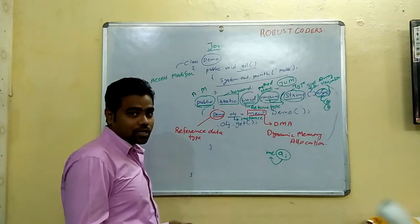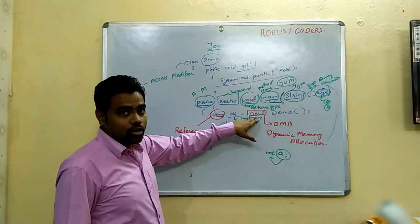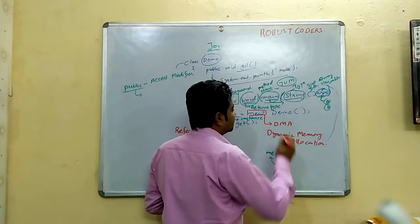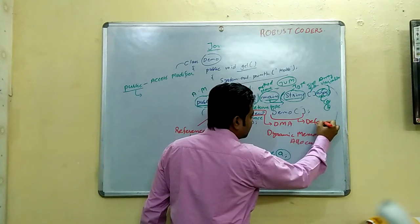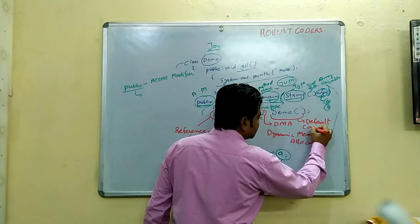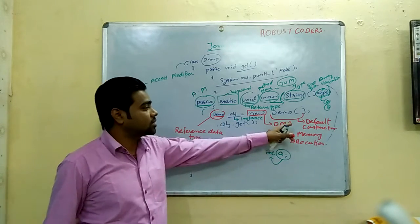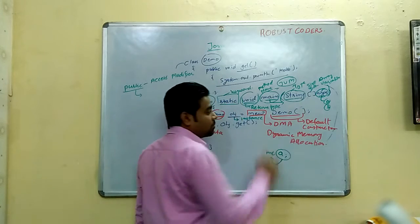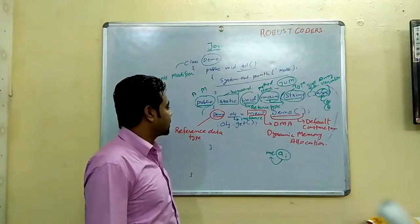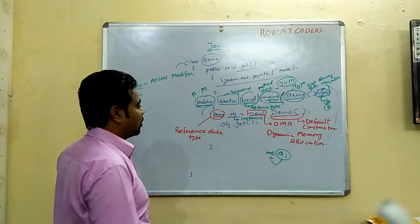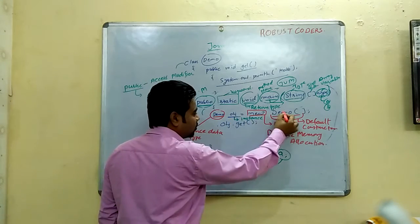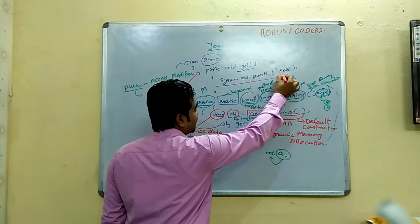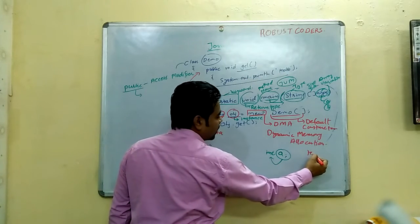The new Demo() calls the default constructor. It is a simple default constructor. When we take the topic of constructors, we will discuss why the default constructor is important and why it is important to create an object. So, Demo obj equal to new Demo creates a new object.